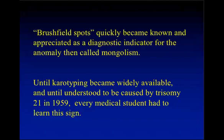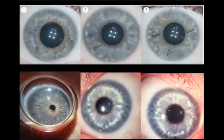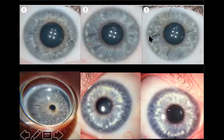These Brushfield spots became quickly known and appreciated as a diagnostic indicator for the anomaly that was then called Mongolism. Until karyotyping became widely available, and until Down syndrome was understood to be caused by three copies of chromosome 21, every medical student had to learn this sign, because it was used to detect in a newborn whether they might have Mongolism or not. In the top picture, we see the Wilflin nodules in the periphery seen in normal individuals, and these larger, more mid-peripheral iris nodules are the so-called Brushfield spots seen in Mongolism.